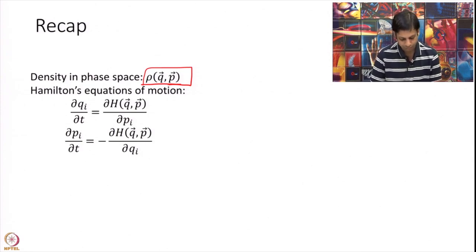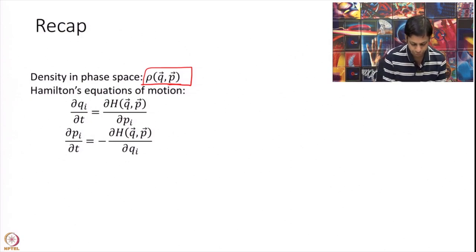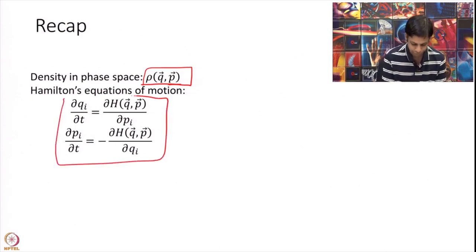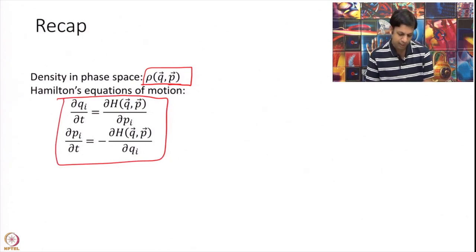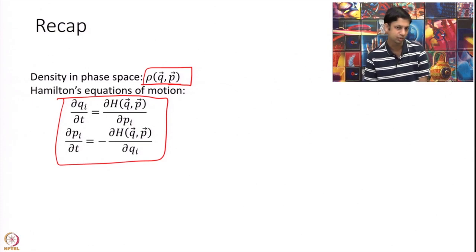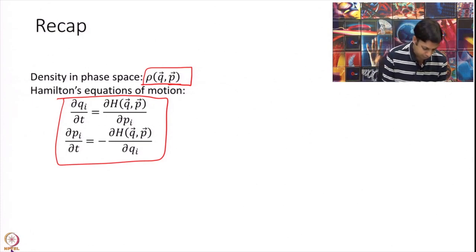We also verified Hamilton's equations of motion given by these equations: del qi over del t is del H over del pi, and del pi over del t is minus del H over del qi. A very symmetrically looking equation. We will move forward with this.